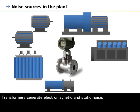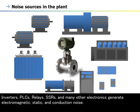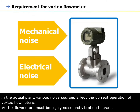Transformers generate electromagnetic and static noise. Inverters, PLCs, relays, SSRs, and many other electronics generate electromagnetic, static, and conduction noise. In the actual plant, various noise sources affect the correct operation of vortex flow meters.